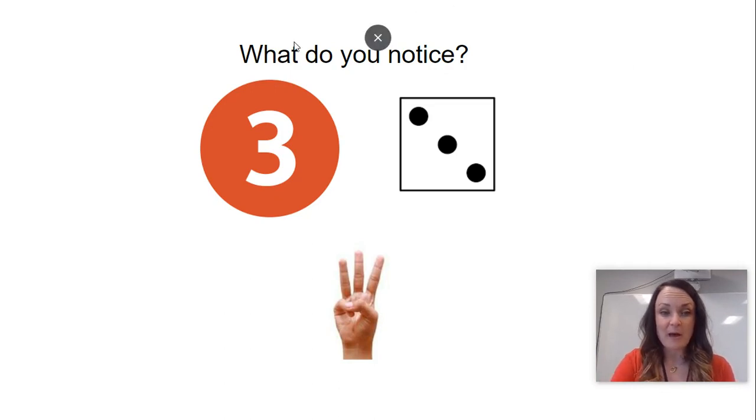Maybe you're thinking about the number right here. Whisper to yourself what that number is. Yeah, it's a three. Good. Maybe you were thinking about this right here. This looks like a dot. Any connections between these two? Oh, there's also three on these dice. One, two, three.